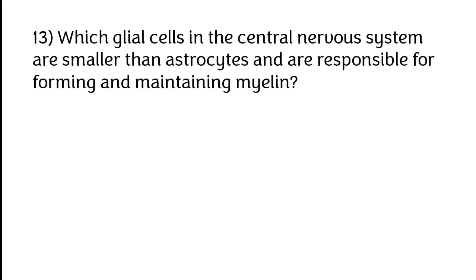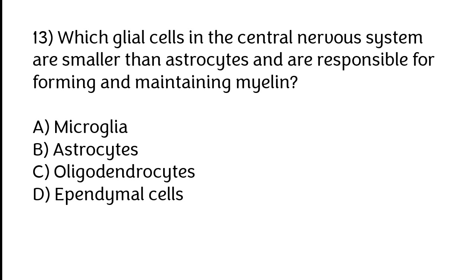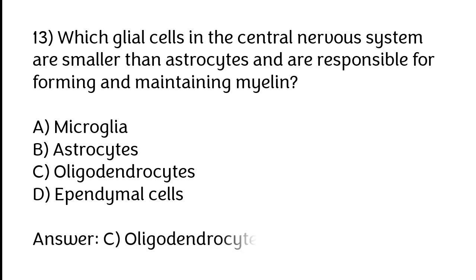Which glial cells in the central nervous system are smaller than astrocytes and are responsible for forming and maintaining myelin? Options: A) Microglia, B) Astrocytes, C) Oligodendrocytes, D) Ependymal cells. The correct answer is option C, oligodendrocytes.